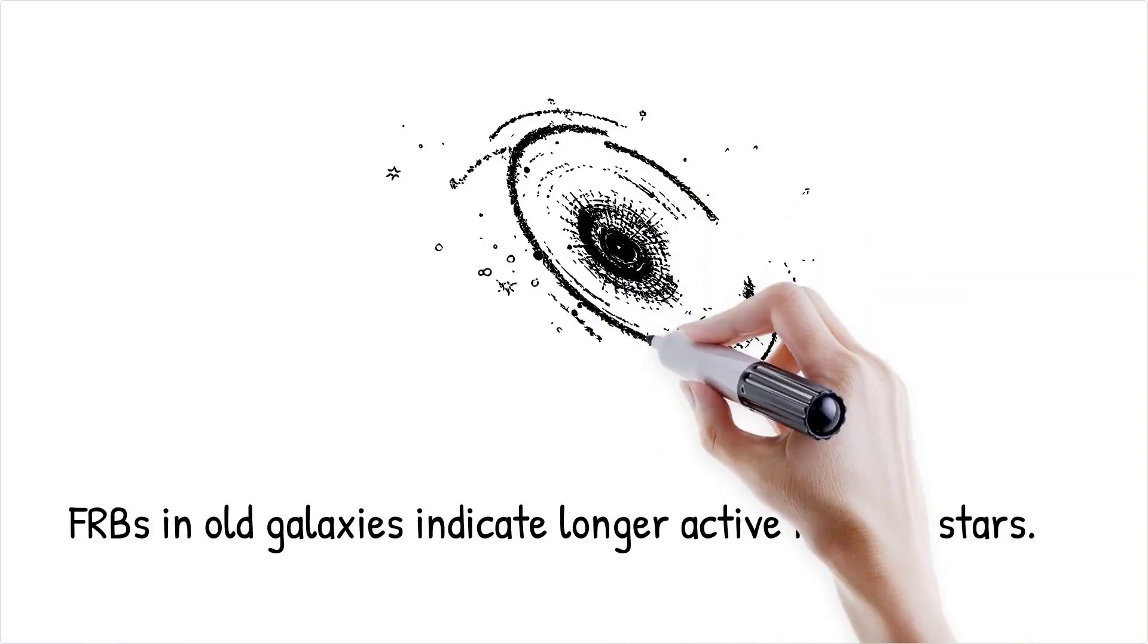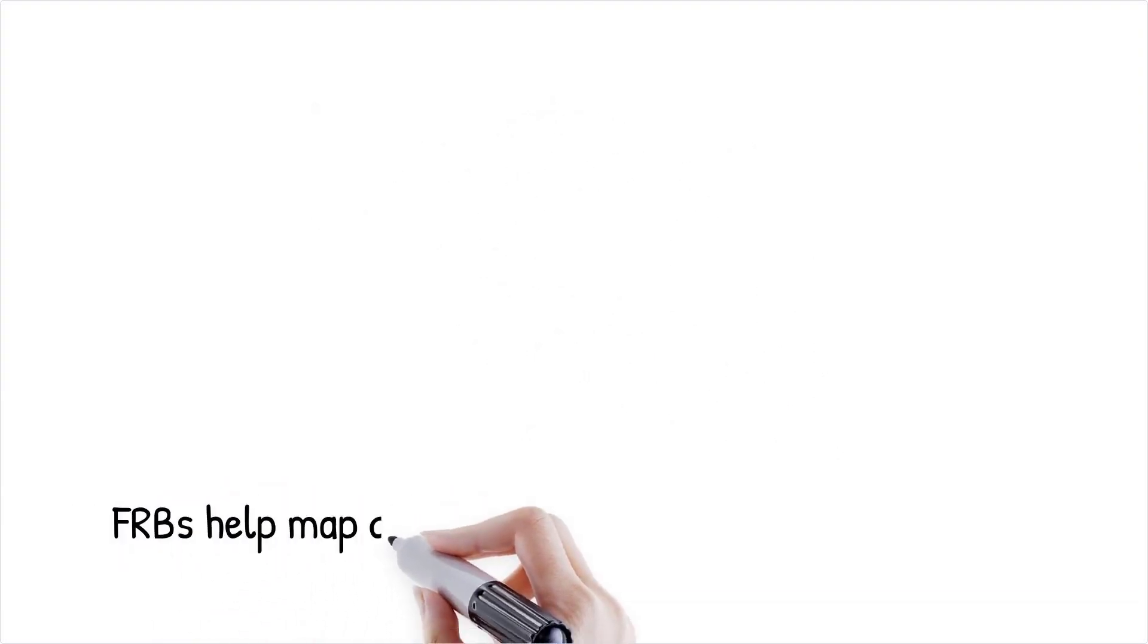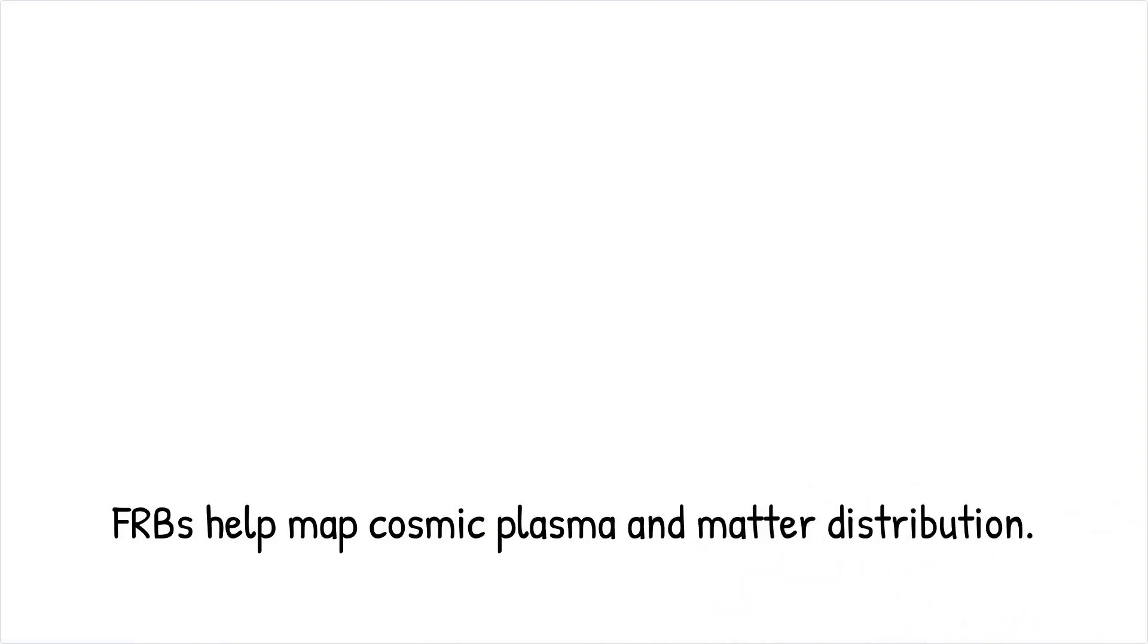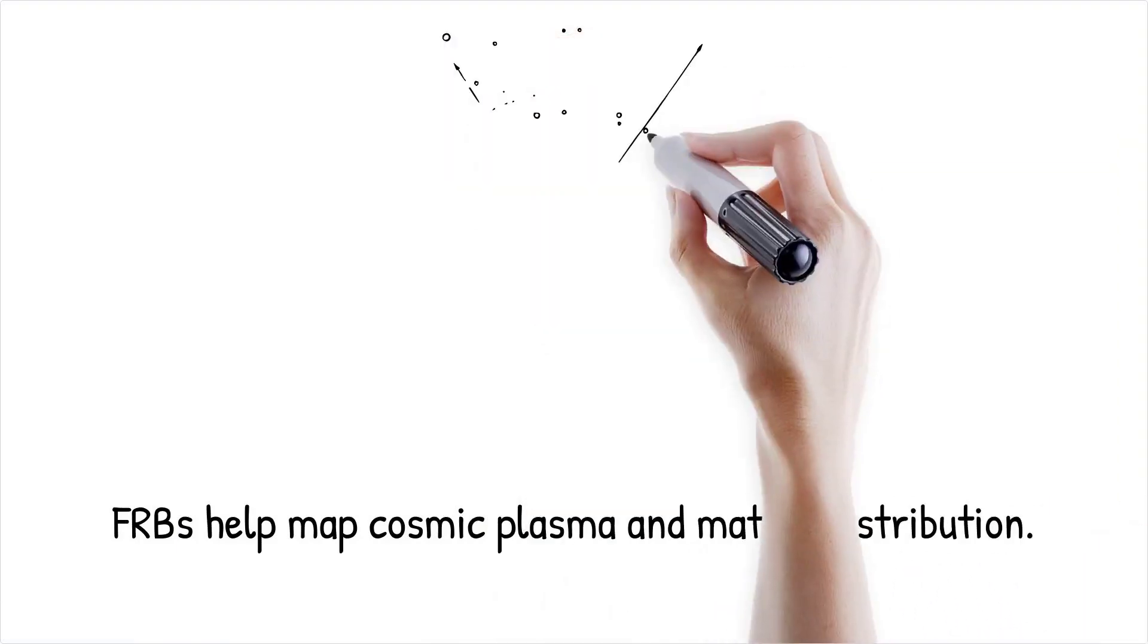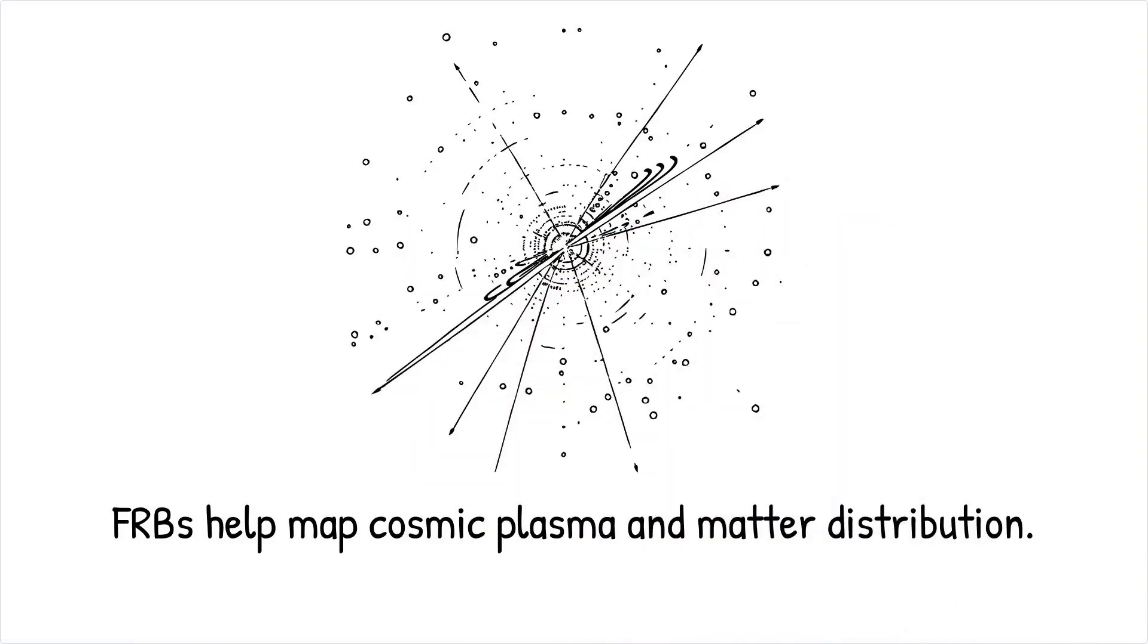Additionally, the existence of FRBs in old galaxies suggests that neutron stars might remain active for much longer than previously thought, altering models of stellar evolution and galactic life cycles. By analyzing FRB signals, scientists can estimate the density of cosmic plasma and better understand how matter is distributed across the universe.